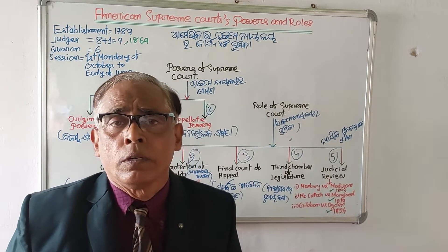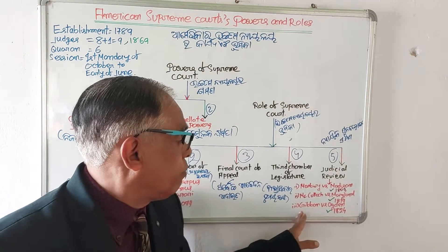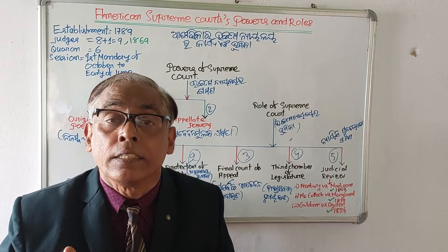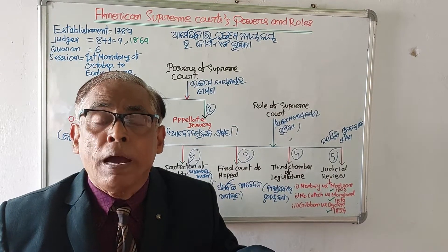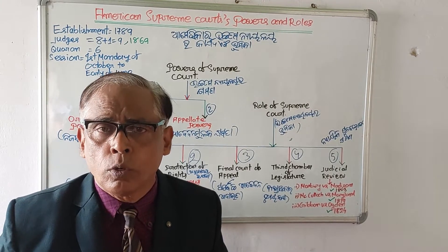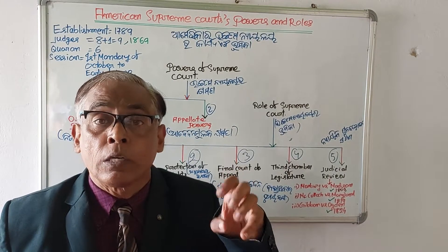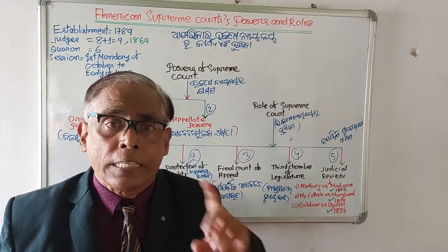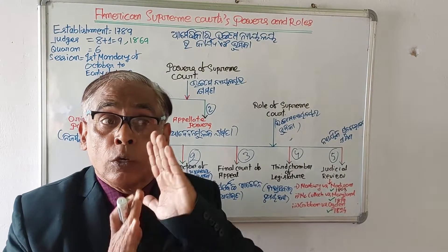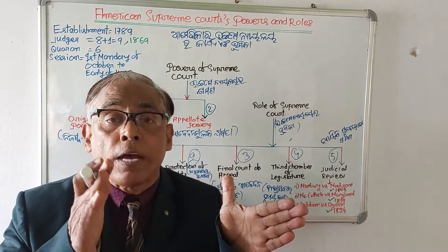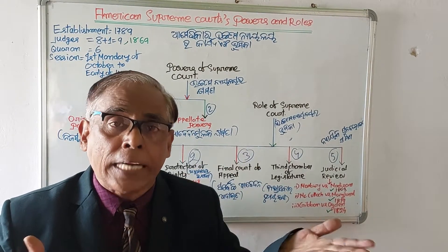In Gibbons v. Ogden (1824), the New York State legislature had granted exclusive power to certain persons to navigate New York waters by steamboat. The American Supreme Court declared this act of the New York State legislature as invalid. In summary, judicial review is the power of the American Supreme Court to review acts of the legislature and decisions of the executive to determine whether they contradict the Constitution — if they do, those acts or decisions are declared null and void.